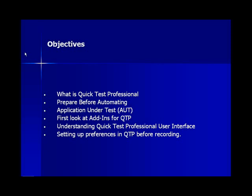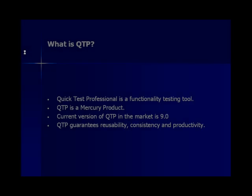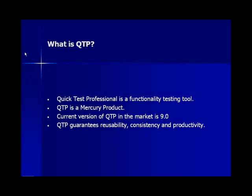So now let us start the class by getting to know what exactly is Quick Test Professional. QTP is basically a functionality testing tool. This is the most commonly used tool for functional testing. Quick Test Professional is a product of Mercury Interactive, and the current version of QTP in the market is 9.0, which was released in the second quarter of 2006.